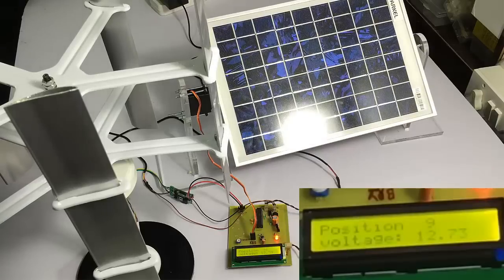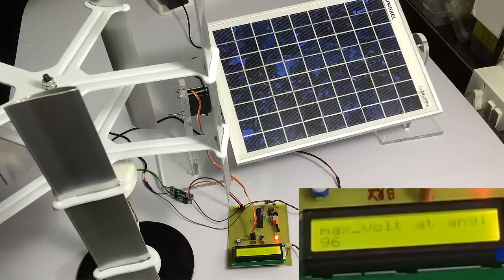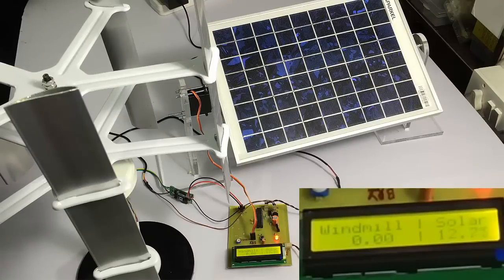After the scanning is complete, it will go back to the angle where maximum voltage was detected and position the solar panel at that angle to get the maximum voltage.